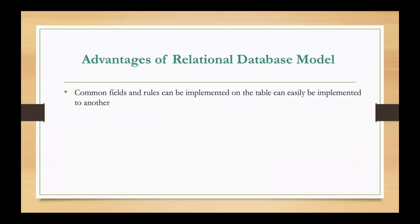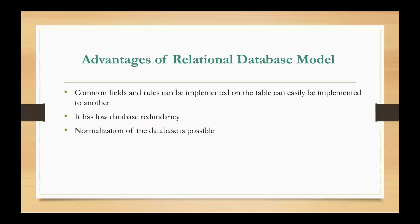The first advantage is that common fields and rules can be implemented on the tables. When we have a common field, we can apply rules and process the data network. The second advantage is that data redundancy is reduced. The third advantage is that normalization of a database is possible in the relational database model.